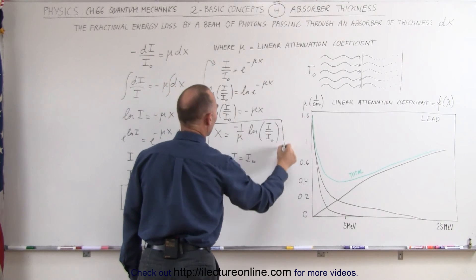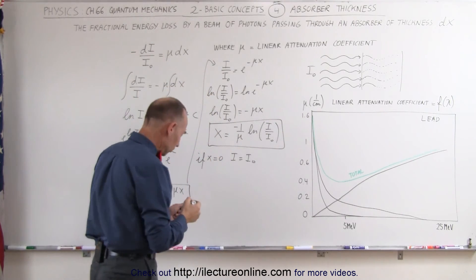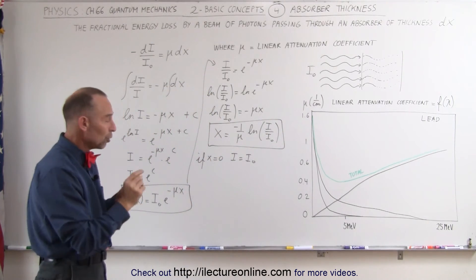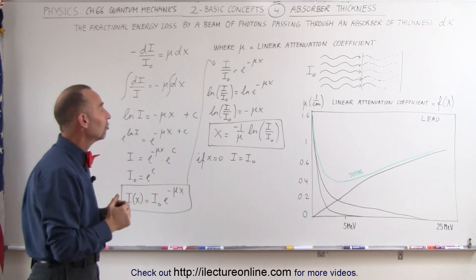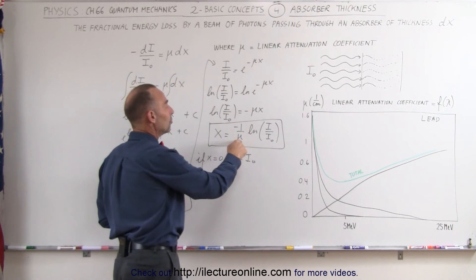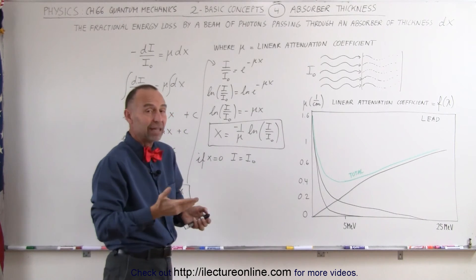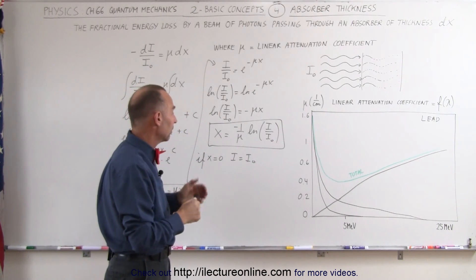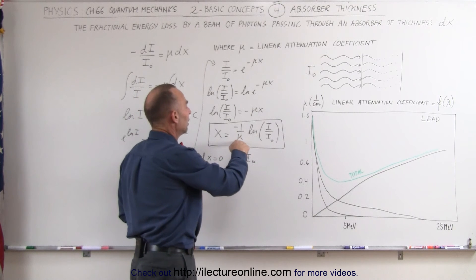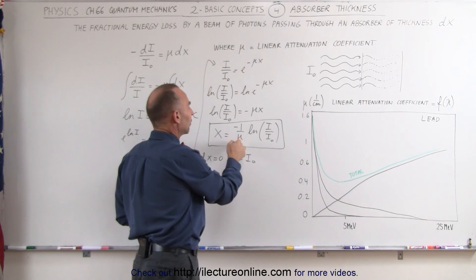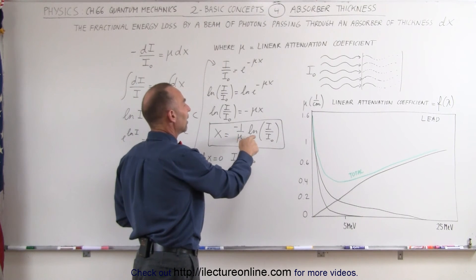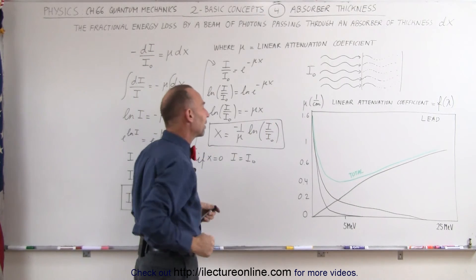Which means that if I want to screen out x-ray radiation and want to know how thick my lead shielding needs to be, I need to calculate the μ for lead at that particular frequency. Let's say 75 keV, that's the typical x-ray at a medical office. So we put in the correct μ for that particular frequency or wavelength of x-rays times the natural log of I divided by I sub naught.